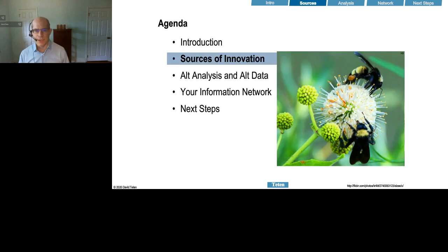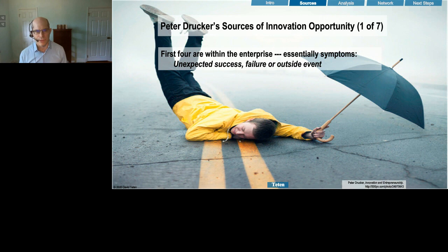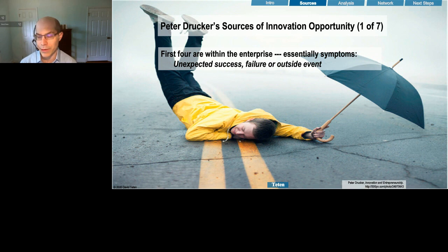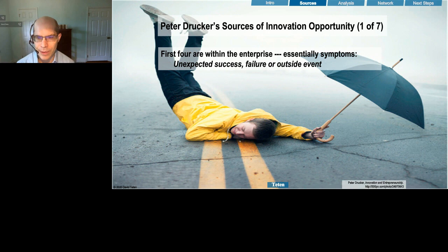Let me talk about the seven sources of innovation opportunity drawing from Peter Drucker's research. The first four are within the enterprise and are symptoms of things going on outside. An easy example is something that is unexpected. A famous example is Soylent, which started as a software company. The founder on the side started experimenting with alternative foods and meal replacements because he found it time-consuming to cook and clean up. He started making powdered food equivalents, and that became his core business — he pivoted from software into food.